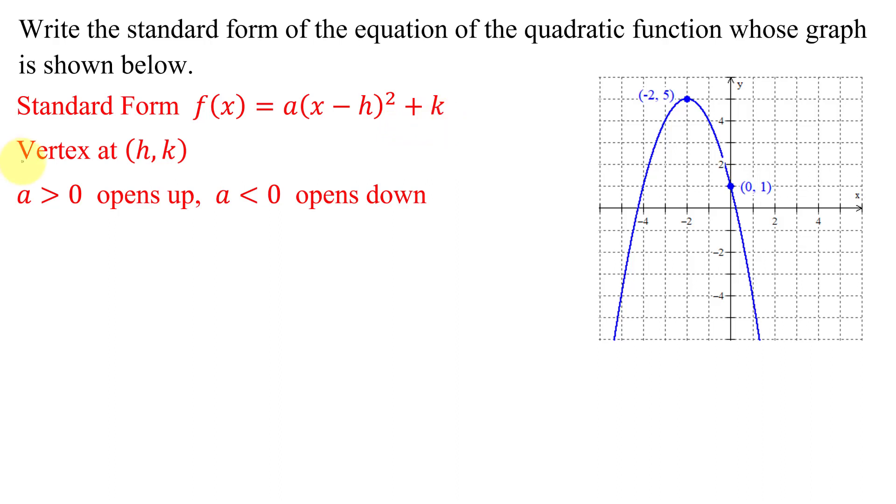This function has a vertex at the ordered pair (h, k). If a is positive, the parabola will open up. If a is negative, the parabola will open down.